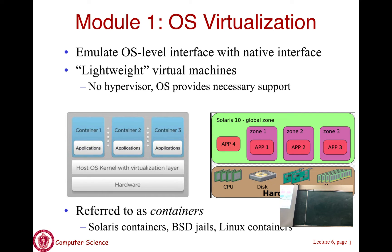Now we will switch gears and talk about OS level virtualization. When you talk about OS level virtualization, you are using the native OS interface to emulate another OS interface. Virtualization is essentially the technique that allows you to take one software interface and emulate another software interface on top of it. In the case of OS level virtualization, you use one OS interface to emulate another OS. You can mimic system calls of a completely different operating system using the native system call interface, or use one version of a kernel to emulate a previous version. Containers are lightweight VMs that you construct using OS level virtualization.